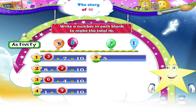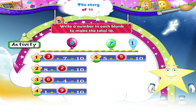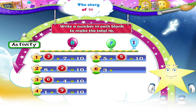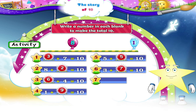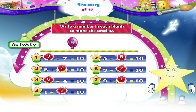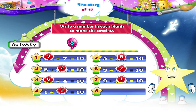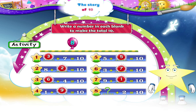Starry, five plus dash equals ten — five plus five equals ten. Here is three plus dash equals ten — three plus seven equals ten. Nine plus dash equals ten — nine plus one equals ten. And the last one, Starry, is dash plus two equals ten — eight plus two equals ten.